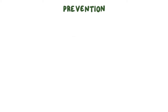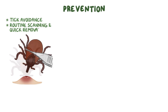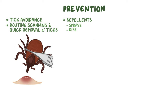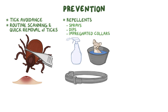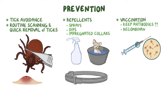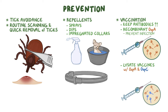Prevention is often the best course of action, and this includes tick avoidance and routine scanning for and quick removal of attached ticks, repellents, sprays, dips, and impregnated collars. Routine vaccination is available for animals and can keep antibody levels high. Vaccines with recombinant OSP-A can prevent infection of the host, while lysate vaccines with OSP-A and OSP-C can offer protection to the host after infection.